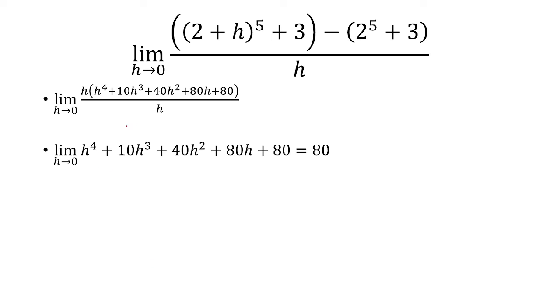So we're left with just whatever is inside the parentheses from the previous step, and when h approaches 0, all of these go to 0, and so we're left with 80 as our final answer.